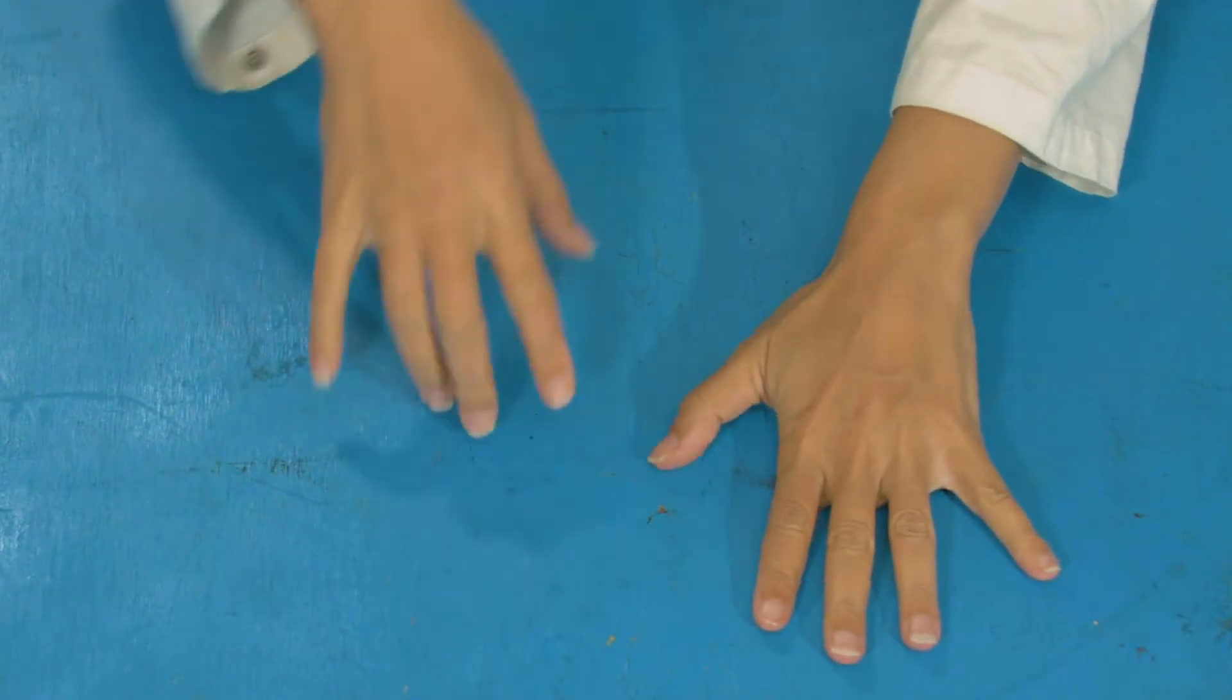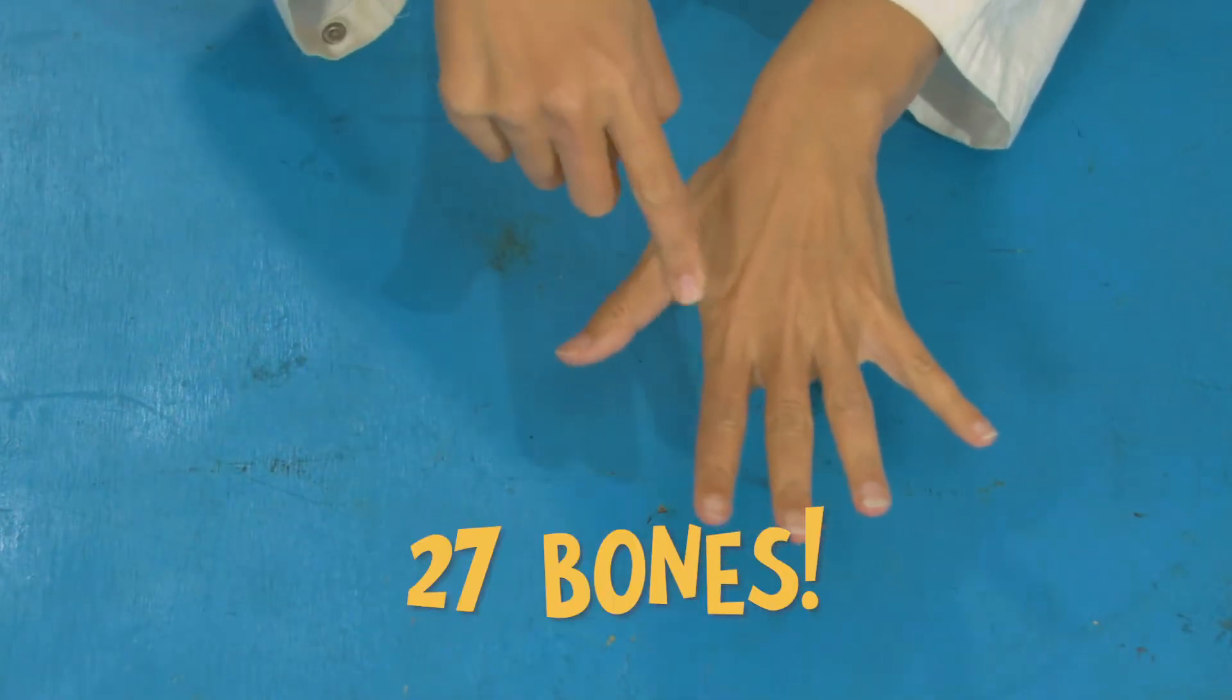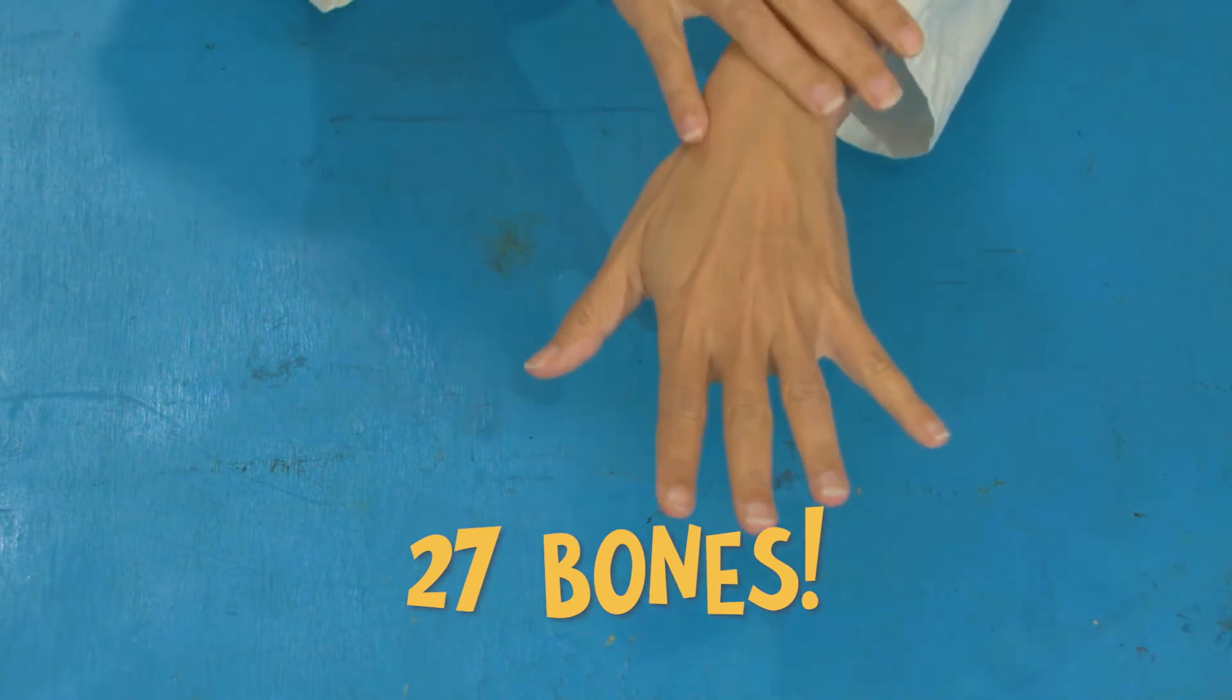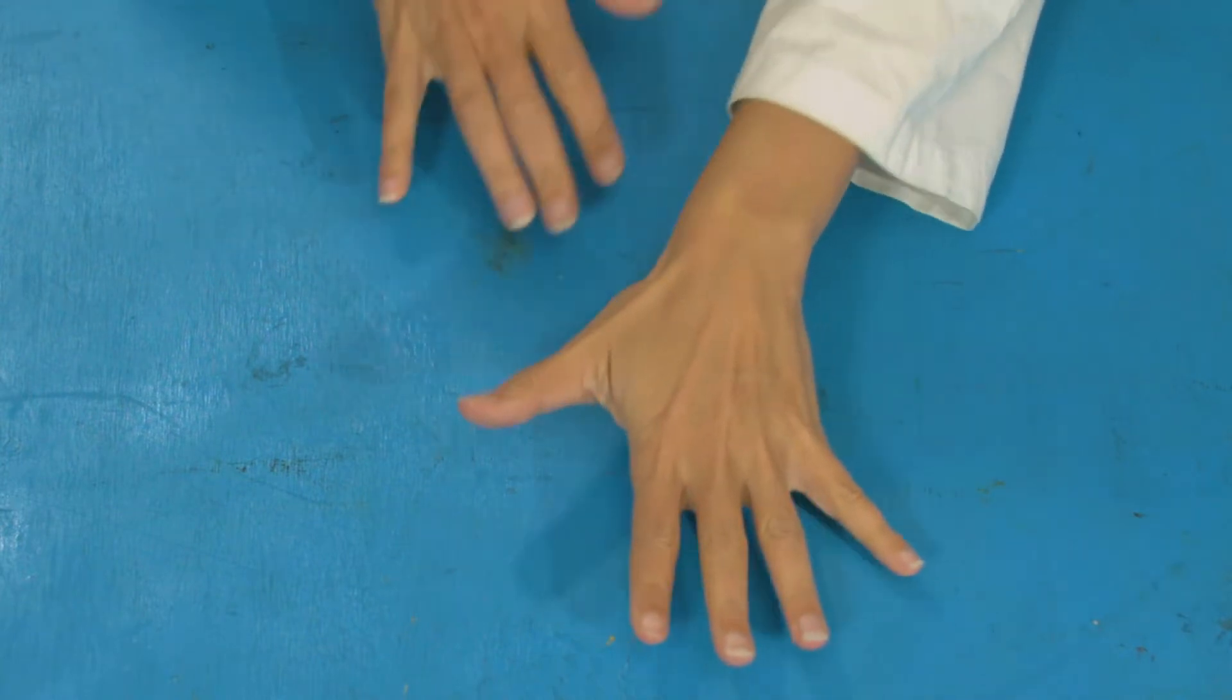So how do our hands work anyway? Well, if you take a look at your hands, you'll see that it's made up of lots of different parts. So you've actually got 27 different bones in here and we can move our fingers and our thumb independently.